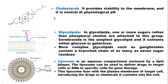Cholesterol is also found in the cell membrane. This is a typical structure of cholesterol — it has a four-carbon ring fused together, with a lipophilic group and an OH group. Cholesterol provides stability to the membrane and is neutral at physiological pH.